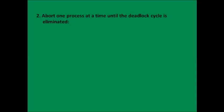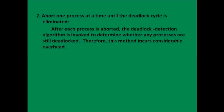The second method is to abort one process at a time until the deadlock cycle is eliminated. We terminate one process and then check whether the deadlock is still there or not. If deadlock is still there, we terminate another process, and so on, keeping on terminating processes one by one until the deadlock cycle is eliminated.